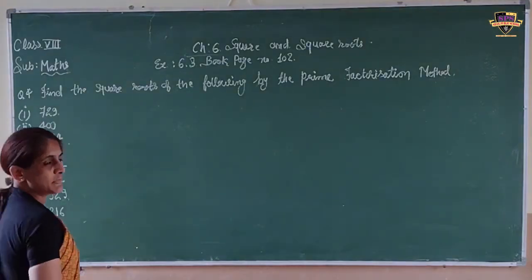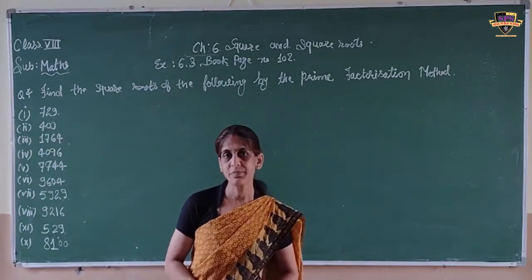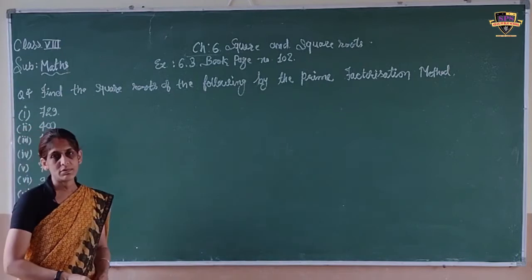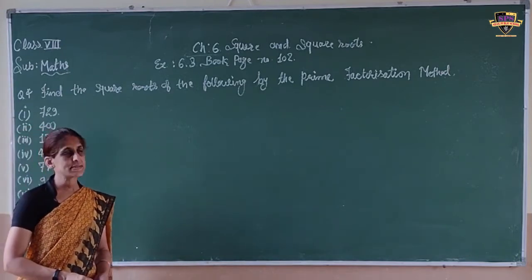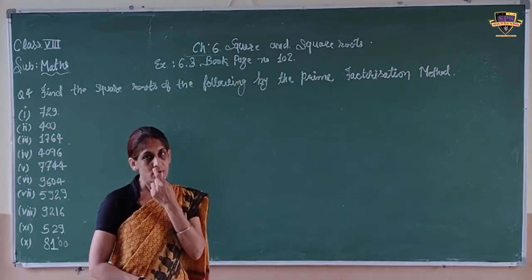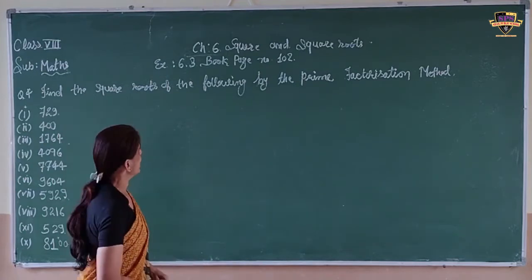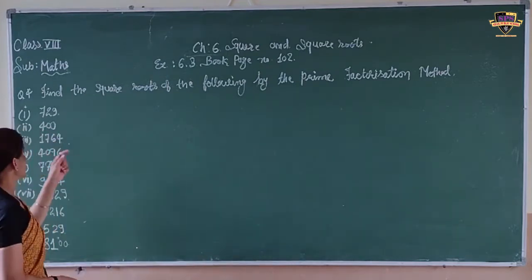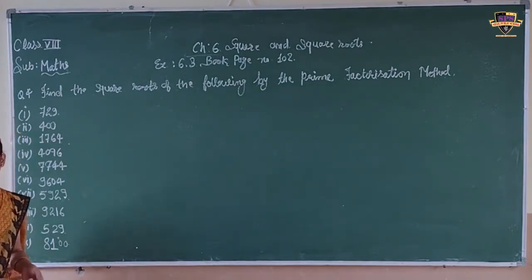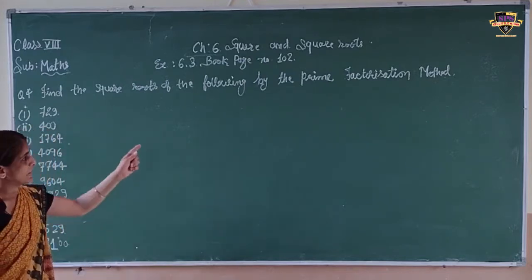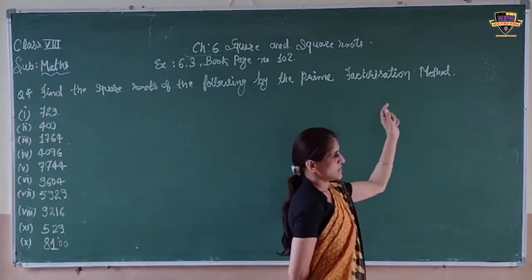Hello students, welcome everyone. We are in chapter number 6, square and square roots. We have completed exercise 6.1, 6.2 and now we are in 6.3 on question number 4. In question number 4, we have to find out the square roots of the following numbers by the method of prime factorization.